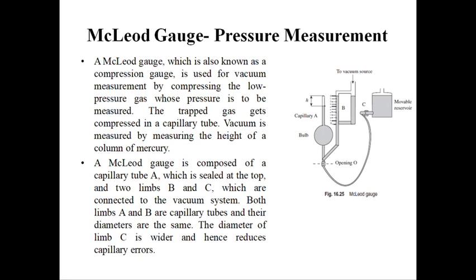A McLeod gauge, which is also known as a compression gauge, is used for vacuum measurement by compressing the low pressure gas whose pressure is to be measured. The trapped gas gets compressed in a capillary. The vacuum is measured by measuring the height of the column of mercury. The gauge is composed of a capillary A which is sealed at the top, and two limbs B and C, which are connected to the vacuum system.